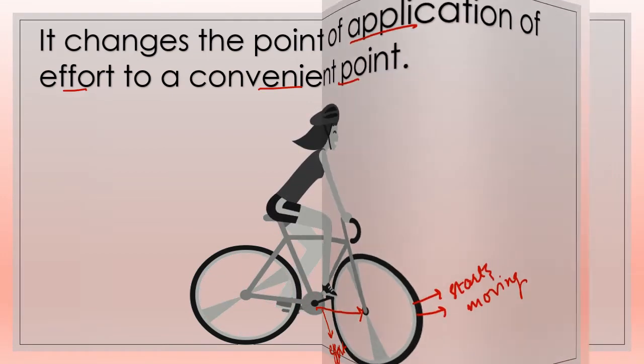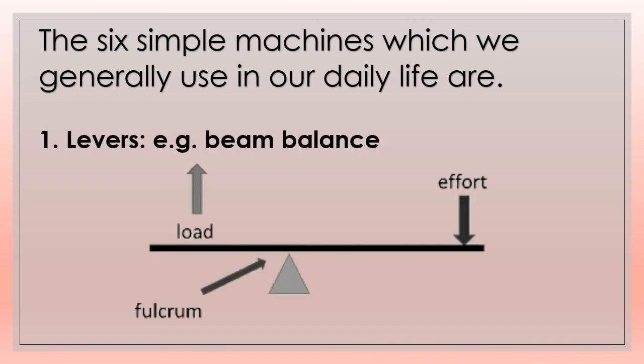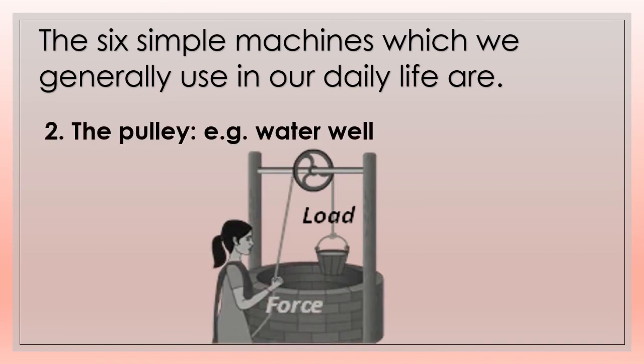There are six types of simple machines which we commonly use in our daily life: levers, for example, beam balance; pulley, for example, water well;